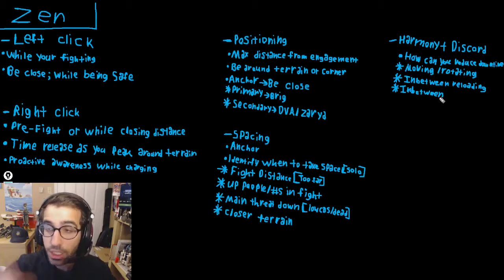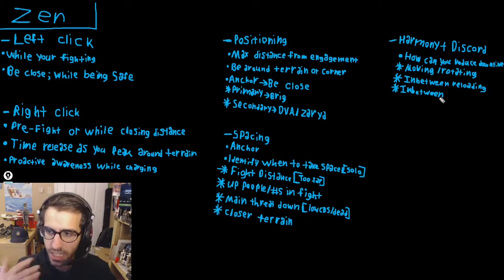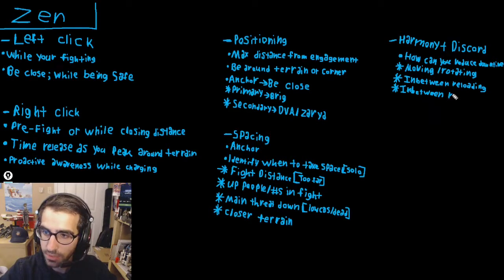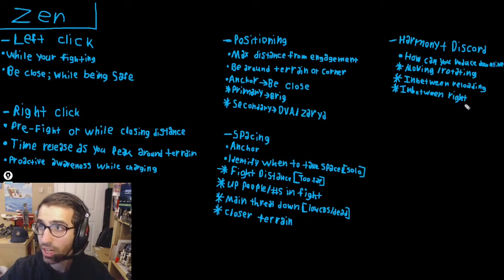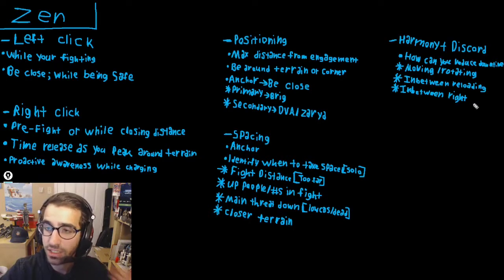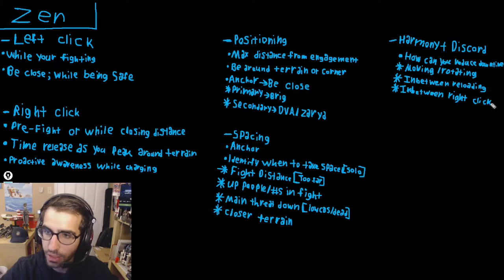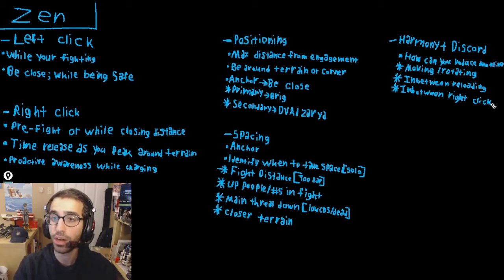Four seconds is a lot of time in Overwatch. Every second counts in such a fast-paced game. Maximizing downtime during reloads, right click charges, and releases lets you constantly keep your orbs on the right targets. Remember, you only have one harmony and one discord orb — one on a teammate, one on an enemy. You need to constantly be aware and moving them around, reducing any wasted time.